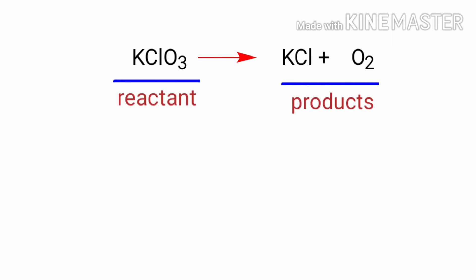In this equation, the reactant is potassium chlorate and the products are potassium chloride and oxygen. If you look at this equation, the equation is not balanced.